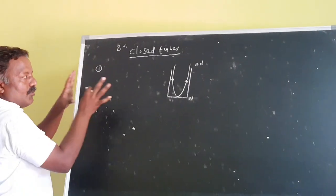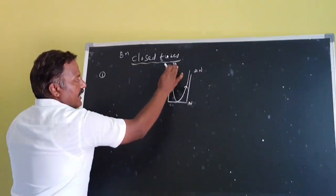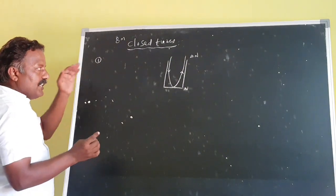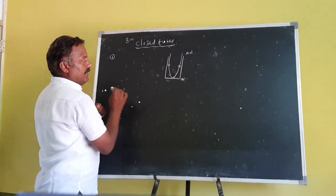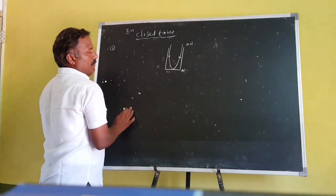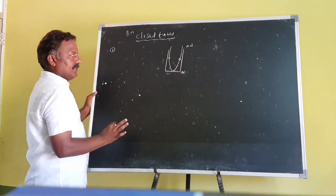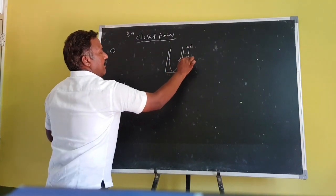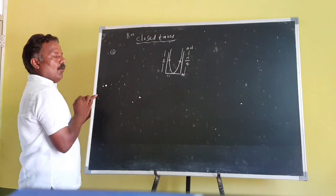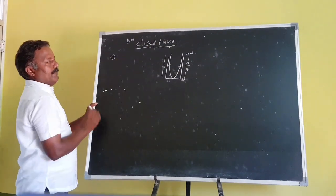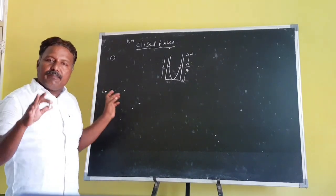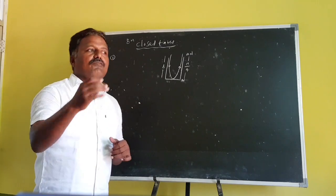In closed pipes, the sound wave is sent into the closed tube. That wave is reflected at the closed end. The incident wave and reflected wave both are superposed on each other and can produce a stationary wave. At the closed end, a node is formed; at the open end, an anti-node is formed. The distance between a node and an anti-node is λ/4. The length of the tube is L. This is about the fundamental mode of vibration — the least mode of vibration in the tube is called the fundamental mode of vibration.